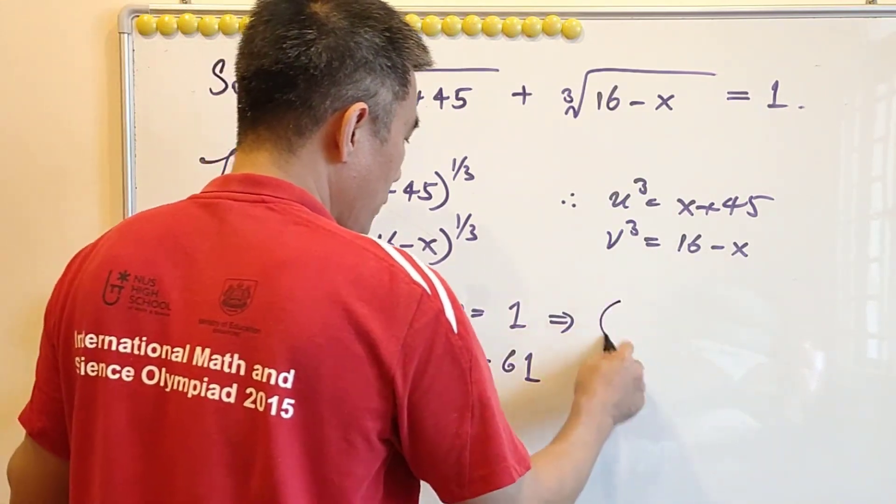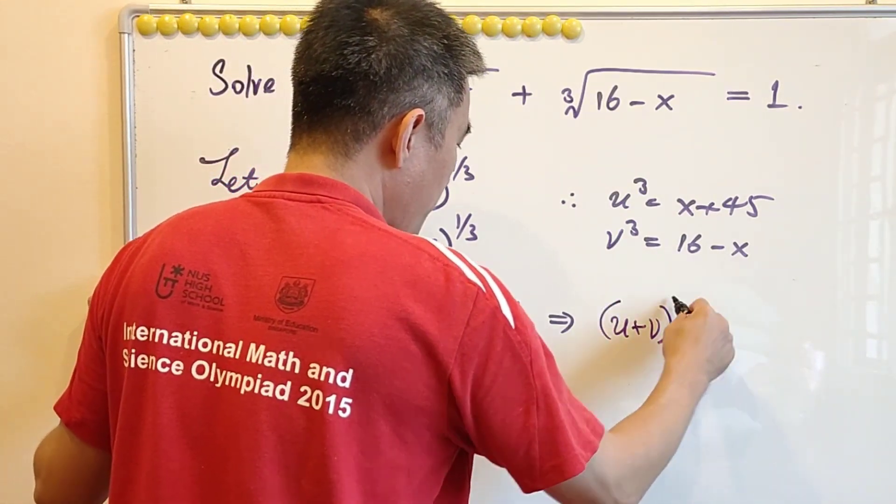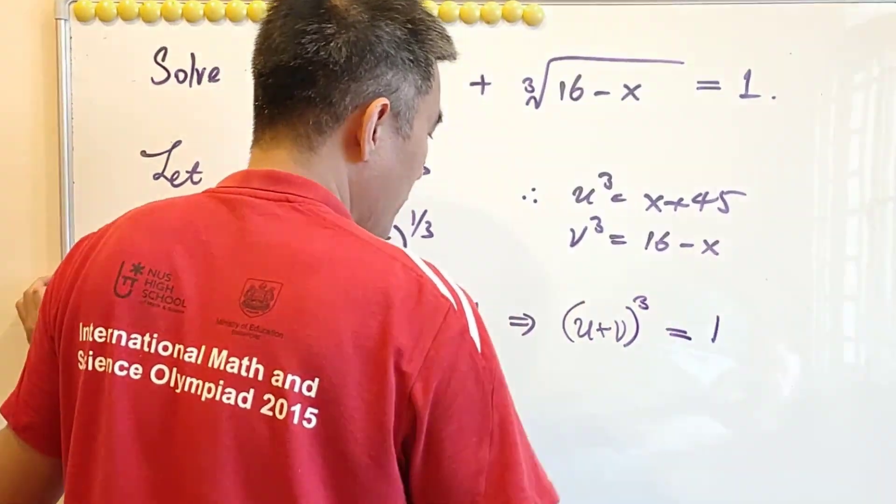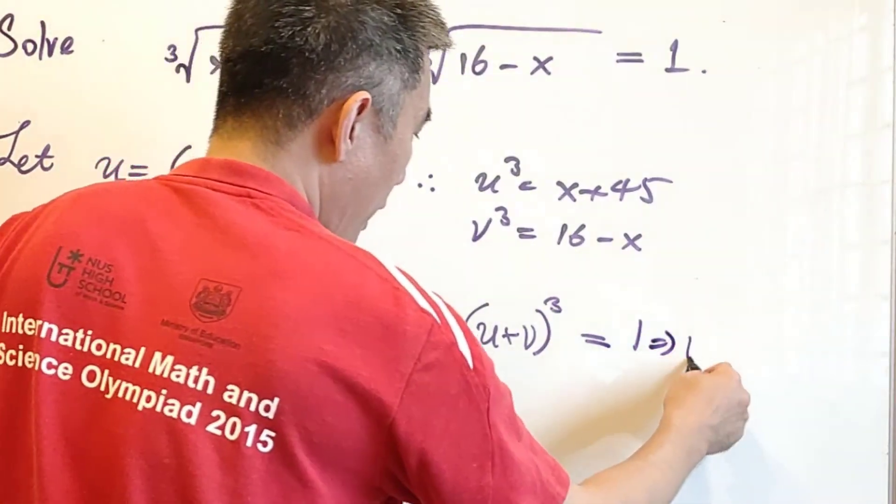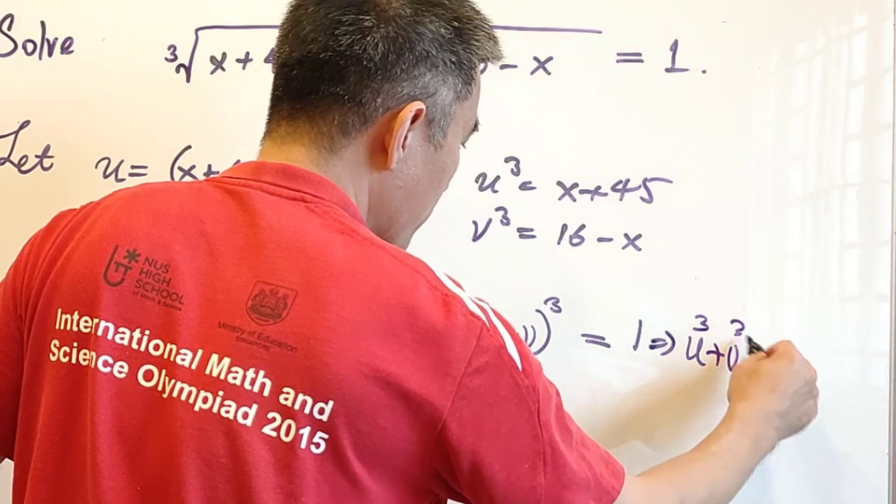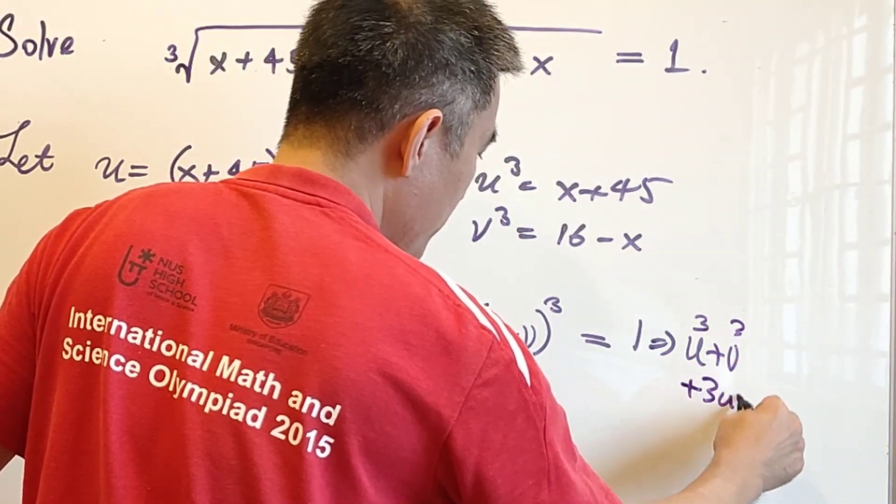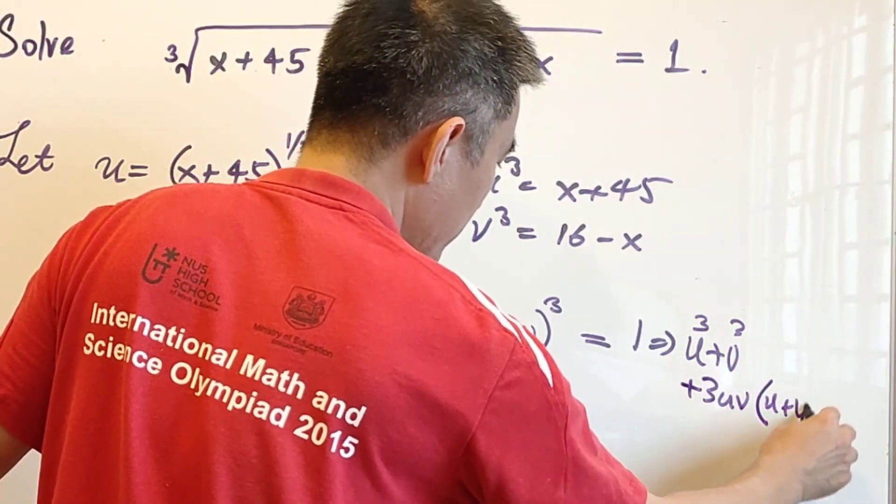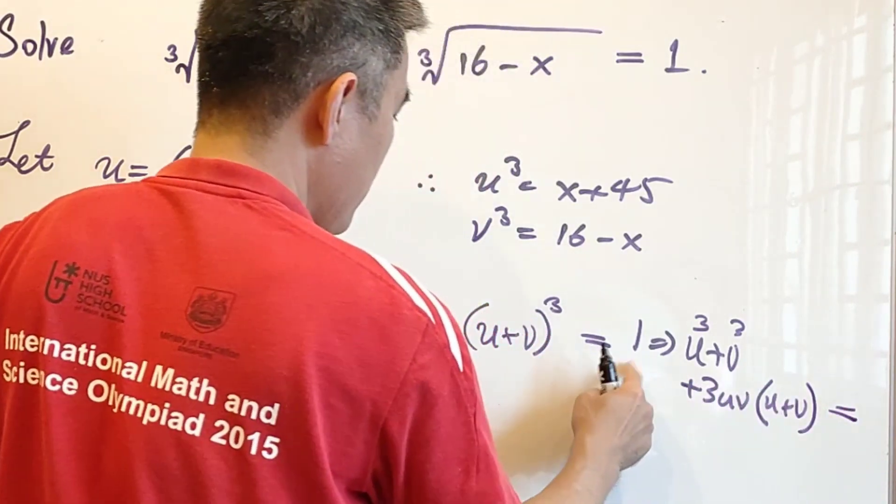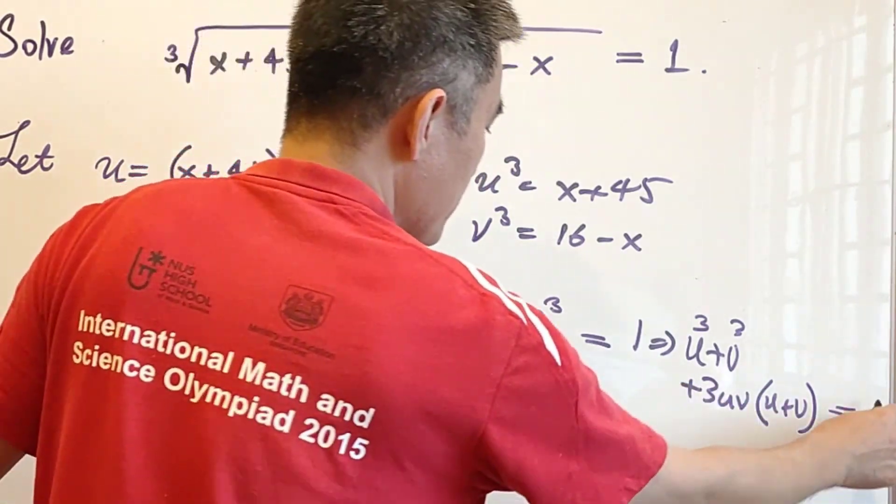So from this equation, we raise it to power 3 and we will have u power 3 plus v power 3 plus 3uv times u plus v, and 1 power 3 is still equals to 1.